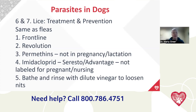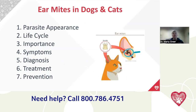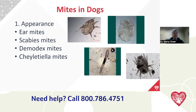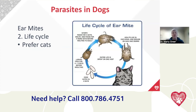Moving on to ear mites. Ear mites are a lot more common than lice. There are four types of mites to discuss: ear mites, scabies mites, demodex mites, and cheyletiella mites — each requiring magnification to see. Ear mites really prefer living in cats' ears; they rarely set up long-term housekeeping in a dog's ear. They can live in cats' ears for decades. The life cycle is similar across types — adult, mate, lay eggs, hatch, repeat — typically a three- to four-week life cycle.